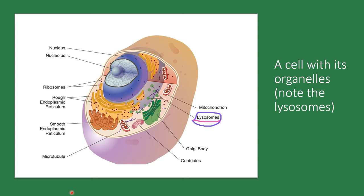When you look at a cell through an electron microscope, you will see that the lysosomes are irregularly shaped vesicles. They are not always round like you see in this picture — they are usually irregularly shaped vesicular organelles. And in one cell, you can see hundreds of them, and they function to keep the cells clean.